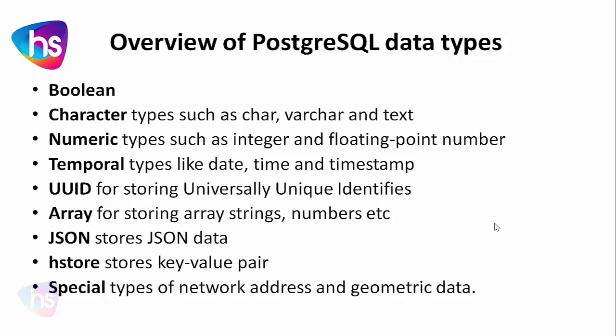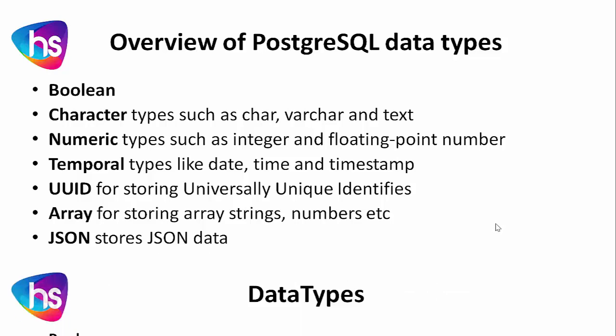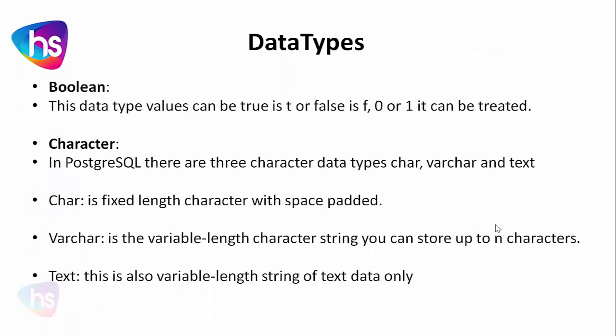HStore stores key-value pairs, and special types store network addresses, MAC addresses, and geometric data in their particular data type columns. We will see each one in more detail.